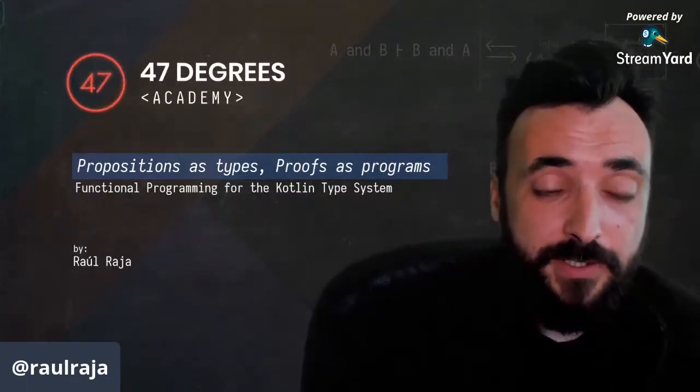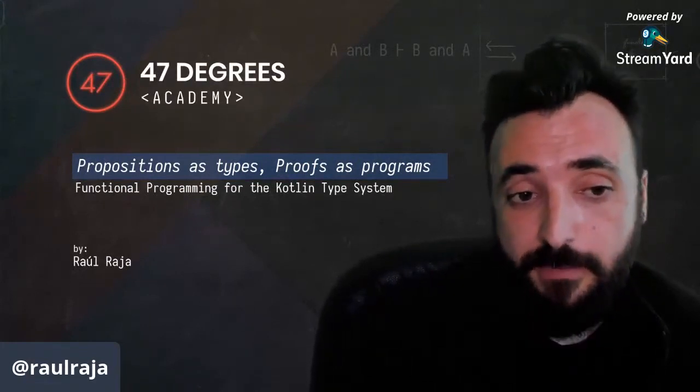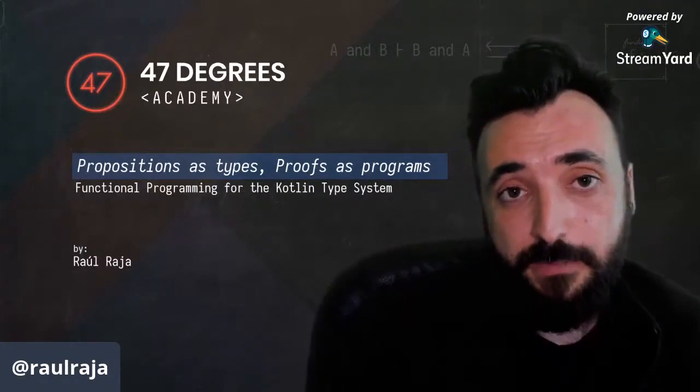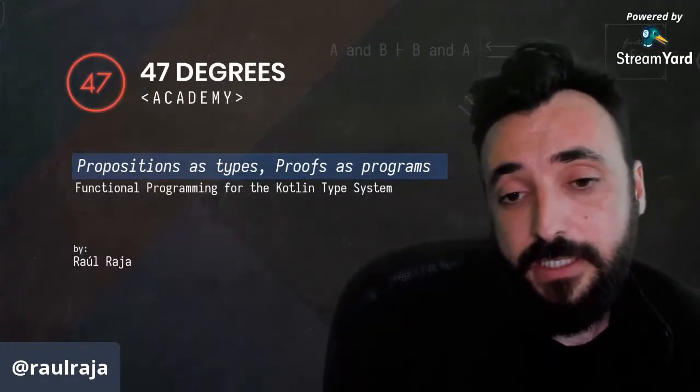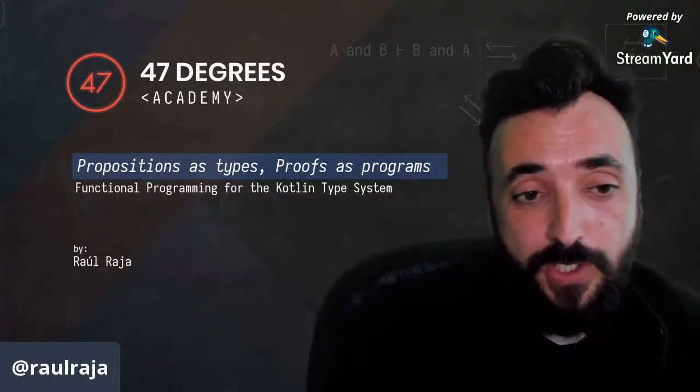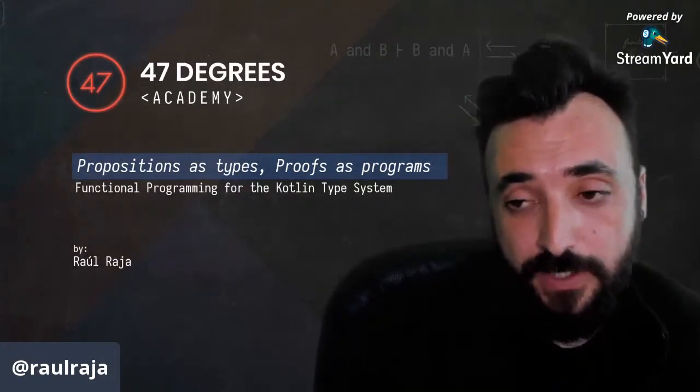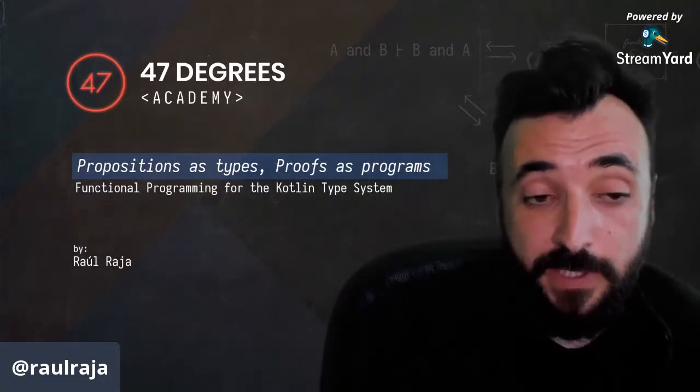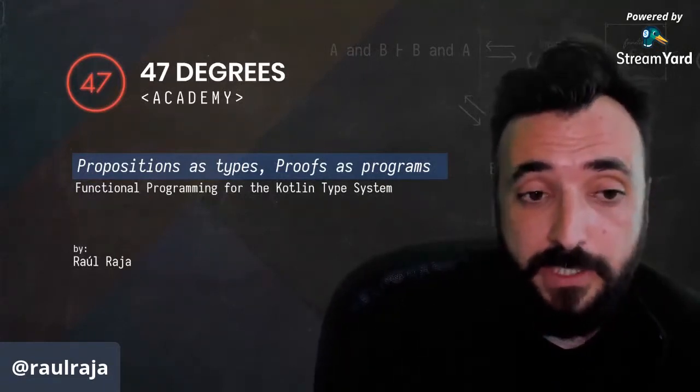What we're going to be talking about today is type proofs, or propositions as types and proofs as programs. These are essentially a way we can encode new powerful features in the Kotlin type system using the basic principles upon which functional programming is built.